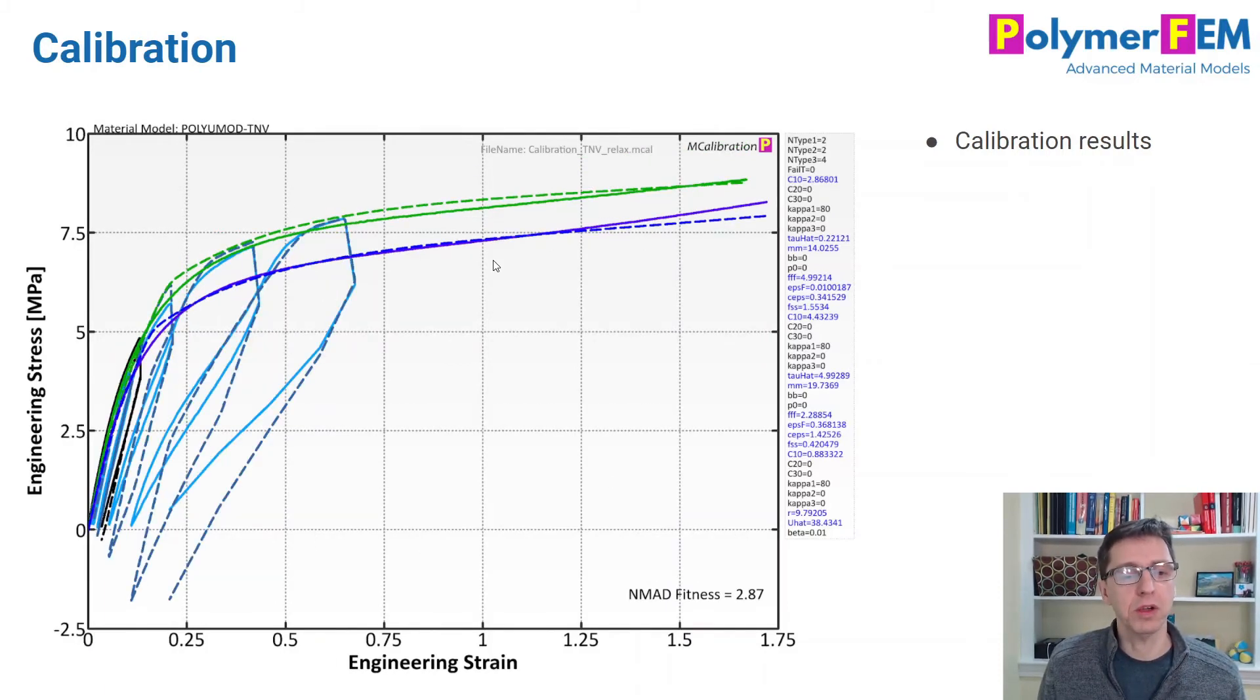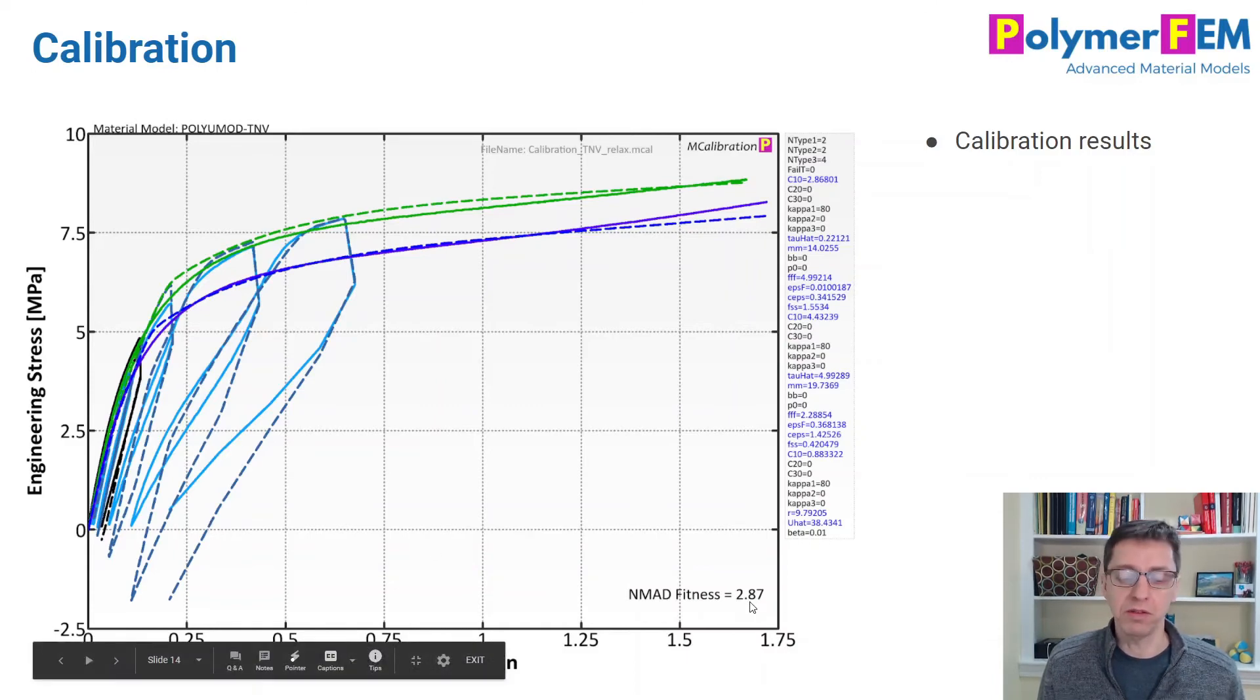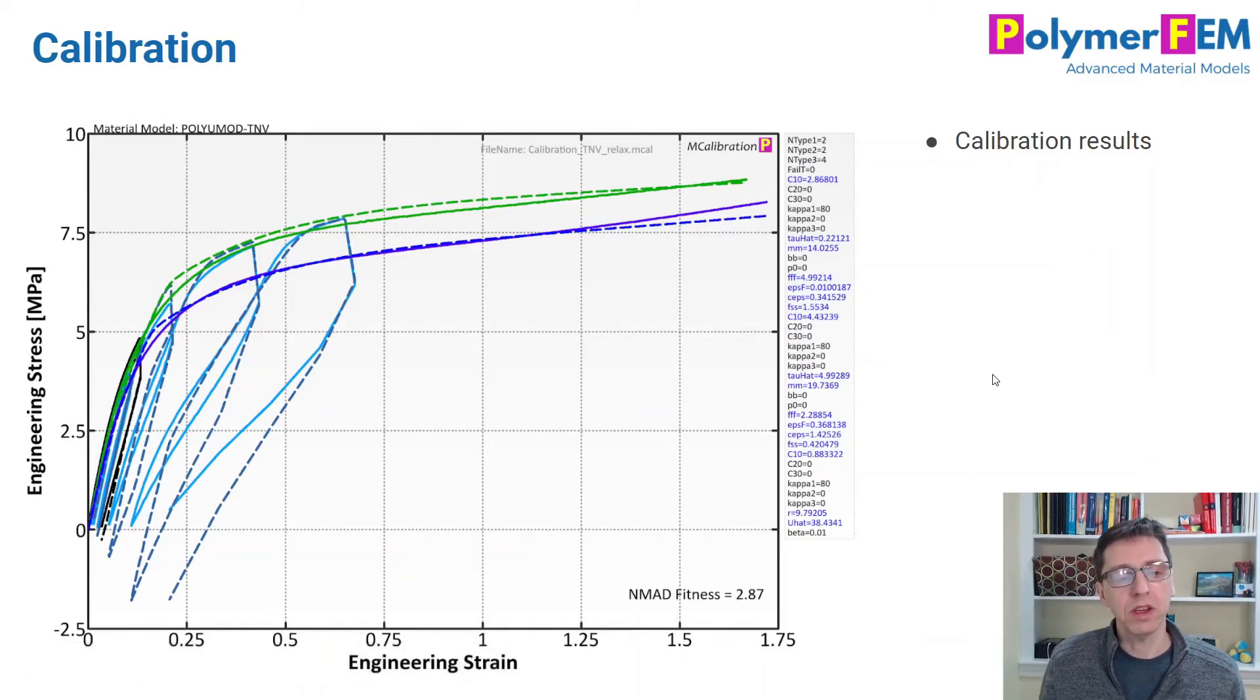If I take that material model now and try to see what happens when you do cyclic loading from the other curves that we have, we'll see it doesn't look so good. It clearly over-predicts the permanent deformation, the plasticity. The error is still very nice, 2.87%, not too bad, but one couldn't expect this model would predict how much it recovers during unloading because we didn't give it information about that. The calibration procedure can't capture that if you don't give it data to work with. This particular TNV model actually has some parameters that allow you to determine how much recovery you see during unloading.